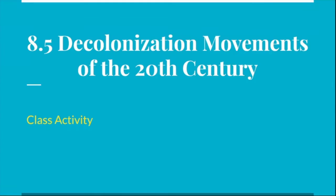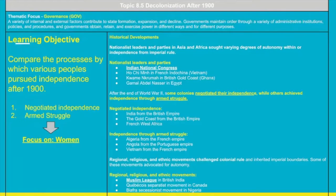Welcome to Unit 8, Topic 8.5 - Decolonization Movements of the 20th Century. Previously we looked at the spread of communism and how the two superpowers, the Soviet Union and the United States, attempted to spread their ideologies and provide economic assistance to many third-world countries attempting or who had already achieved independence through decolonization. While the drama of the Cold War was unfolding, we have many decolonization movements from the 1930s all the way up to the late 1990s.